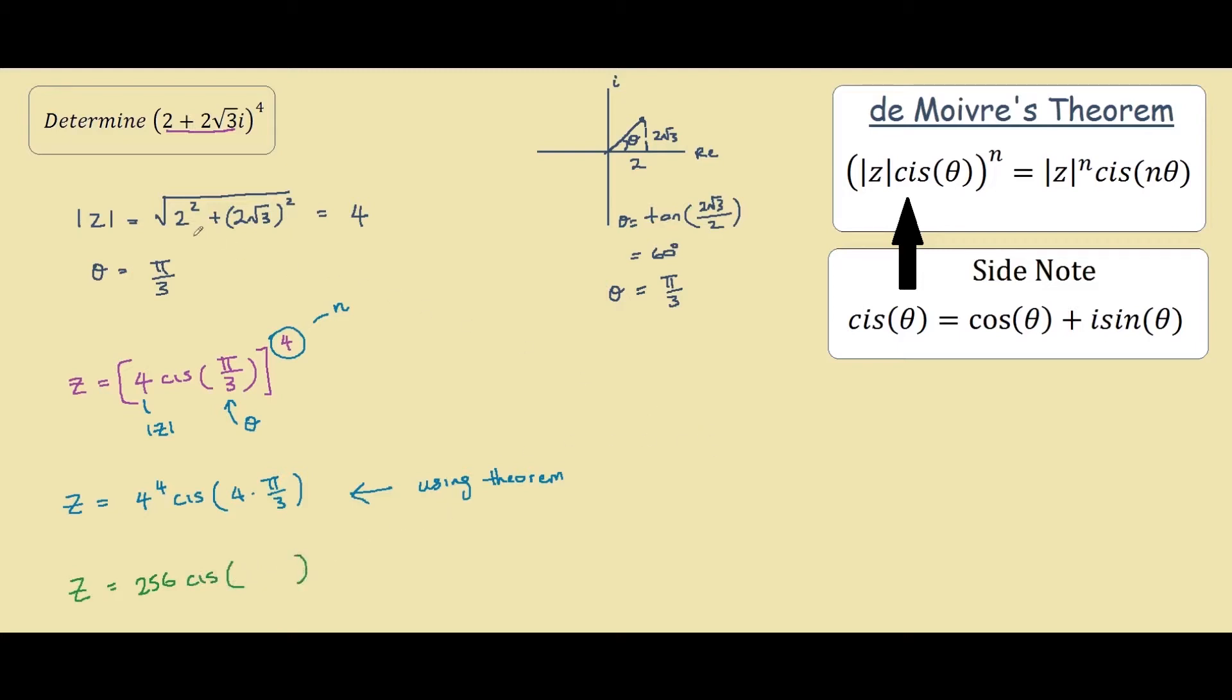However, from our diagram over here we can tell that 4 pi on 3 is actually going across like that, which is pi. Pi on 3 is here, so our actual angle can be expressed as negative 2 pi on 3, and this is your answer.